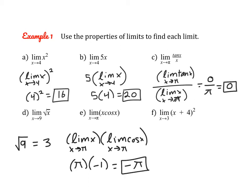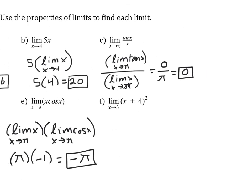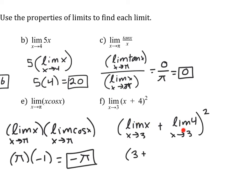For this last one, we could just substitute 3 and know that 7 squared is 49, but let's break it down using two properties: the sum property and the power property. For the sum, we find the limit of x as x approaches 3 and the limit of 4 as x approaches 3 separately, then square the sum of our limits. The limit of x as x approaches 3 is just 3, and the limit of 4 as x approaches anything is just 4. Then we square the sum and get the same result as direct substitution.